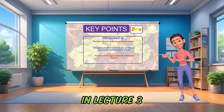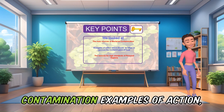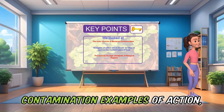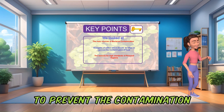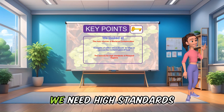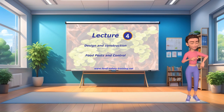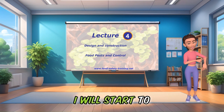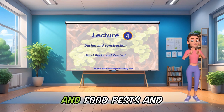In lecture 3 we looked at the main sources of bacterial contamination, examples of action which should be taken to prevent the contamination of food, and the reasons why we need high standards of personal hygiene. In the next video I will start to go through design and construction of food premises, food pests and control.